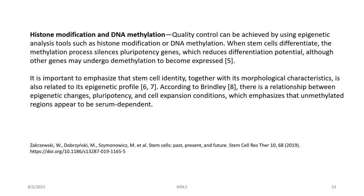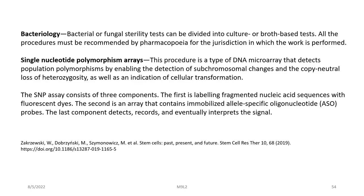Histone modification and DNA methylation quality control can be achieved using epigenetic analytic tools. When stem cells differentiate, the methylation process silences pluripotency genes, reducing differentiation potential, although other genes may undergo demethylation to become overexpressed. Stem cell identity together with its morphological characteristics is related to its epigenetic profile; according to Brinley, there is a relationship between epigenetic changes, pluripotency, and cell expansion conditions, with unmethylated regions appearing to be serum dependent. Other important parameters are the presence of bacteria or single nucleotide polymorphisms.